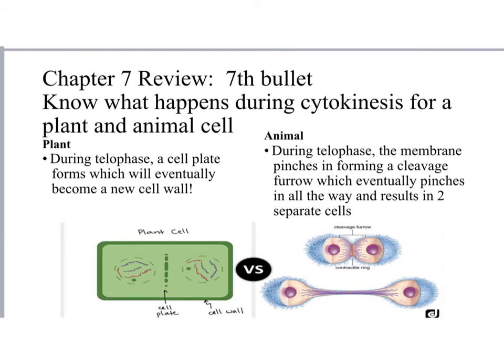Know what happens during cytokinesis in plant and animal cells. In plant cells, a new cell wall must form between the two cells, so a cell plate made of cellulose forms first and eventually becomes the new cell wall. In animal cells, which have no cell wall, the cell membrane pinches inward during telophase, forming a cleavage furrow, which eventually pinches all the way to produce two separate cells.